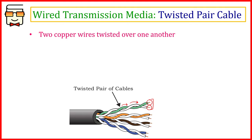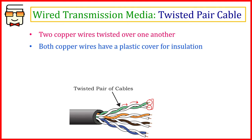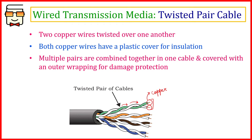Each of these wires is internally a copper wire, and over each copper wire there is a plastic covering for insulation — because copper wires are good conductors, this provides damage protection and safety for the user. Multiple such pairs are combined together in a single cable, and all of them are then covered with an outer plastic covering.